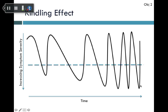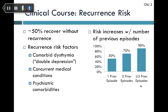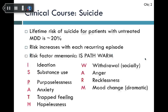There is significant recurrence risk with MDD. Only about half of treated patients recover without recurrence. Risk factors include comorbid dysthymia — mild, persistent low mood on which severe episodes can be superimposed, called double depression — concurrent medical conditions, and psychiatric comorbidities. Recurrence risk increases with episode count: 50% after one episode, 70% after two, and 90% after three or more prior episodes.